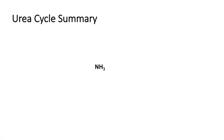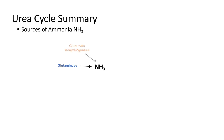In summary, what are the sources of ammonia? One source is the glutaminase reaction — taking glutamine through glutaminase to produce ammonia. Another reaction is the glutamate dehydrogenase reaction, which takes glutamate and also produces ammonia.